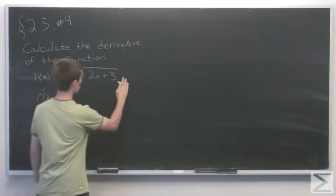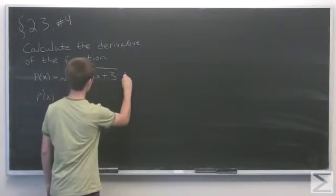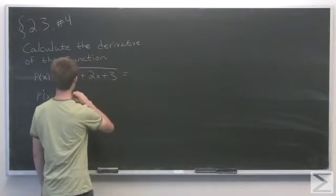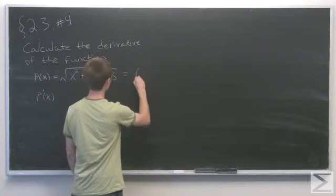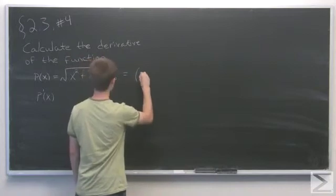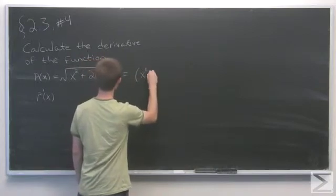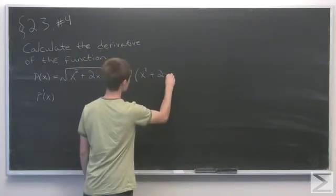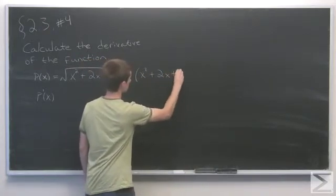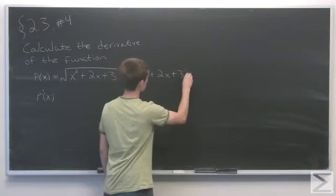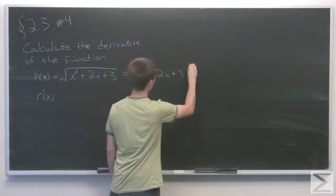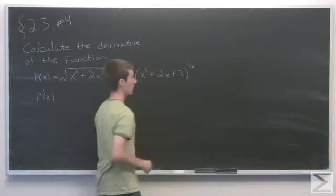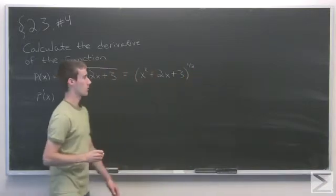It may be useful to rewrite the original function in the form x squared plus 2x plus 3 to the 1 half power, just to get rid of that radical.